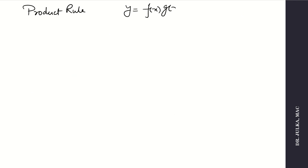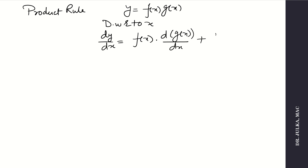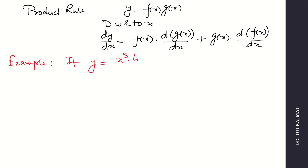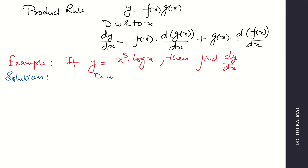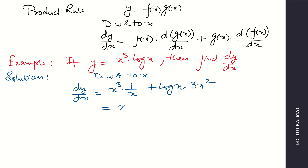Next is the product rule. When two functions are given as a product f(x) times g(x), the derivative is: f(x) as it is times derivative of g(x) plus g(x) as it is times derivative of f(x). Example: if y equals x to the power 3 times log x, find dy by dx. Derivative of x cube is 3x square and derivative of log x is 1 by x. So dy by dx equals x cube times 1 by x plus log x times 3x square. Taking x square as common, the answer is x square into (1 plus 3 log x).